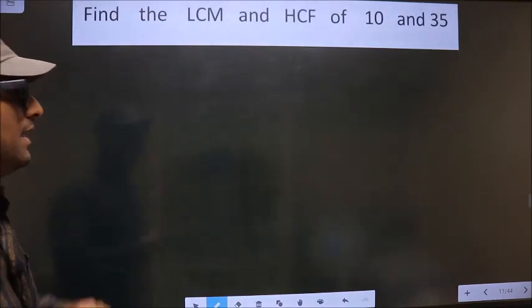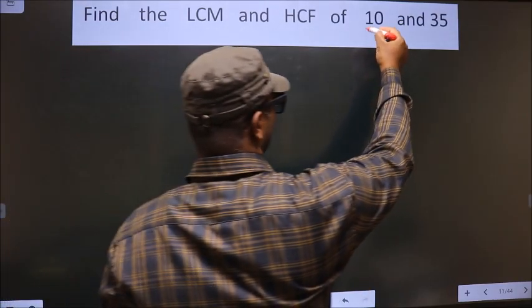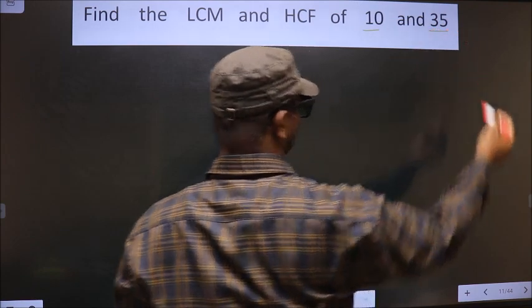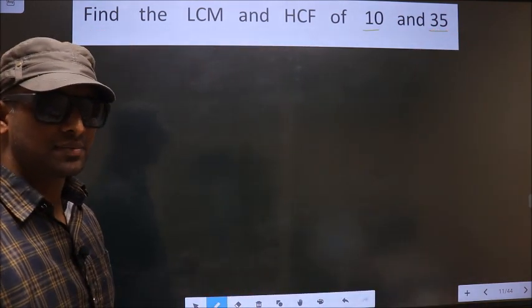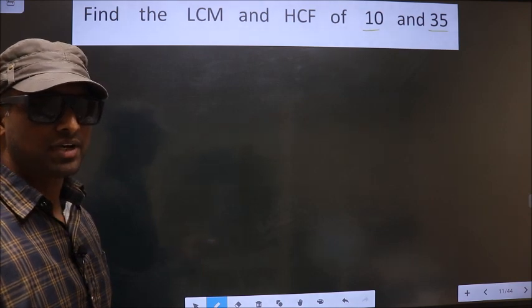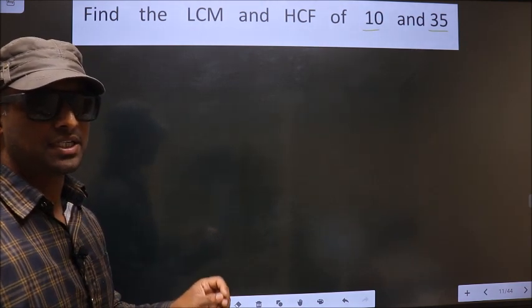Find the LCM and HCF of 10 and 35. To find the HCF and LCM, first we should do the prime factorization of each number separately.